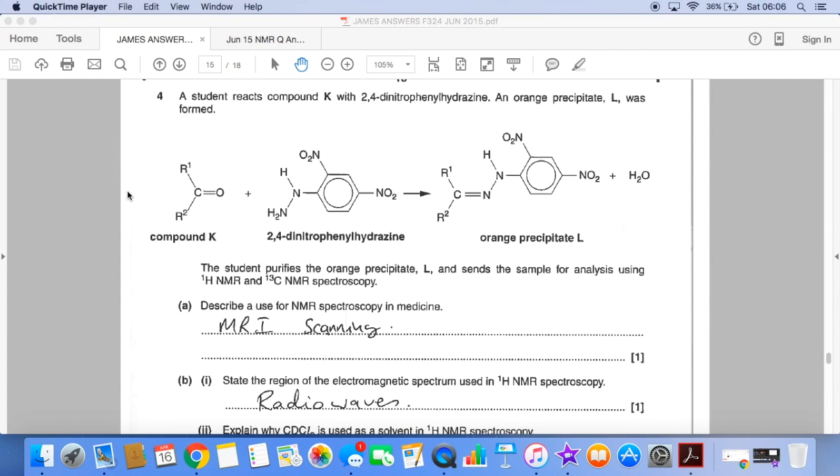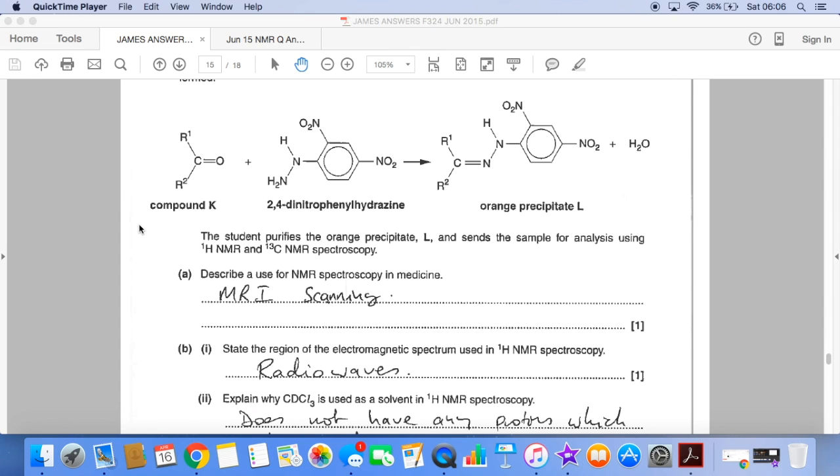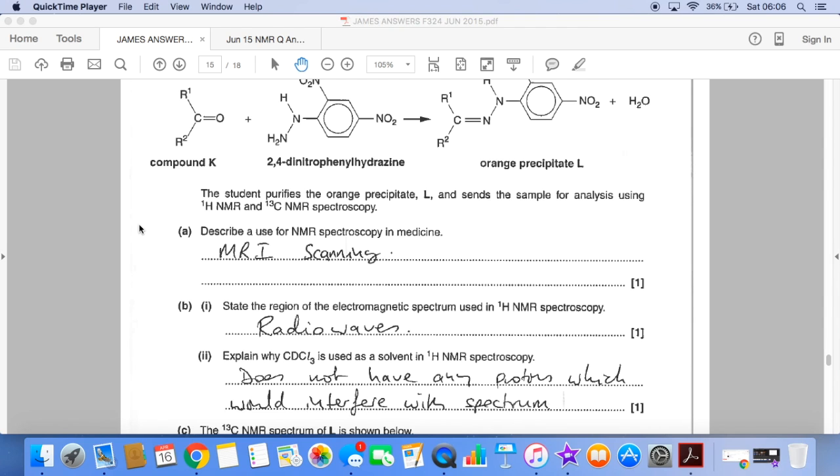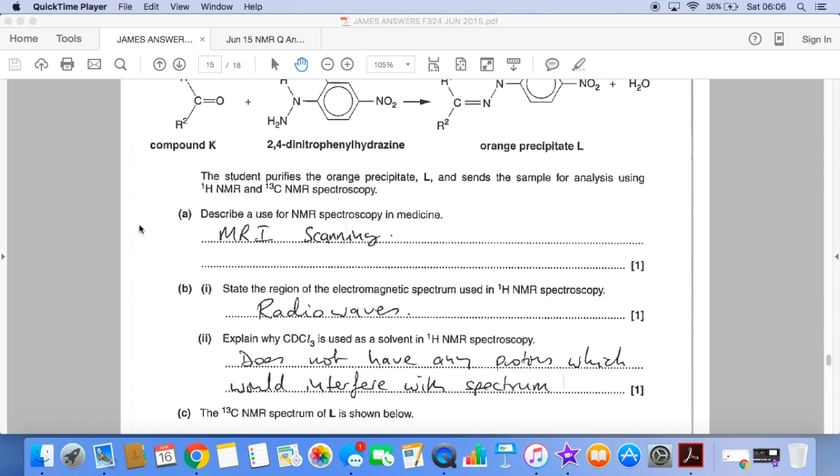So part A, the use for NMR spectroscopy in medicine is MRI scanning, magnetic resonance imagery scanning. The region of the electromagnetic spectrum used is the radio wave section. Why is CDCl3 used as a solvent in proton NMR spectroscopy? It doesn't have any protons. The only proton it had has been replaced with the deuterium isotope, hydrogen-2, the mass number of 2, doesn't have a spin, and so it doesn't give a signal that would interfere with the spectrum.